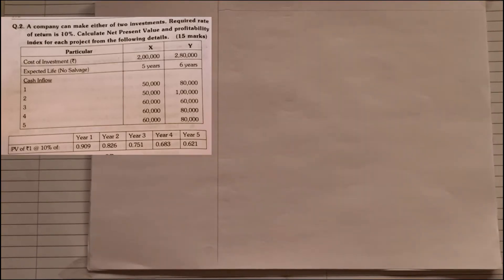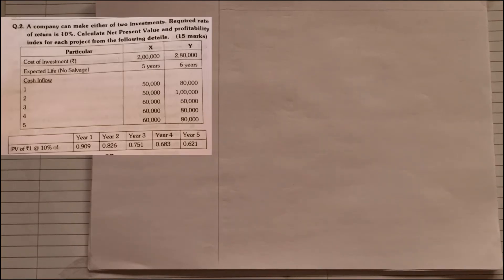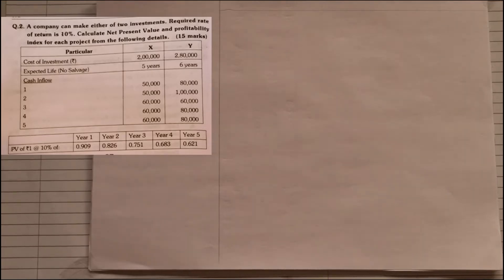Now the very first question, we will read the question once. A company can make either of two investments. Required rate of return is 10%. Calculate net present value and profitability index for each project from the following details. They are giving you cost of investment, expected life of five years, cash inflow, and PV factor.